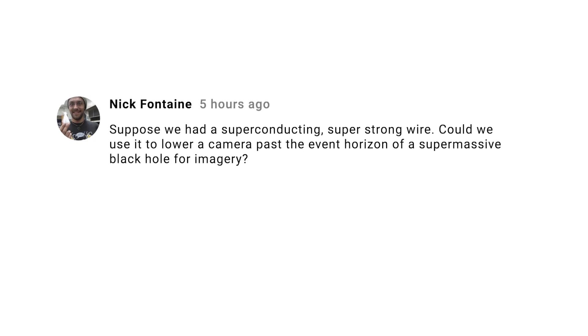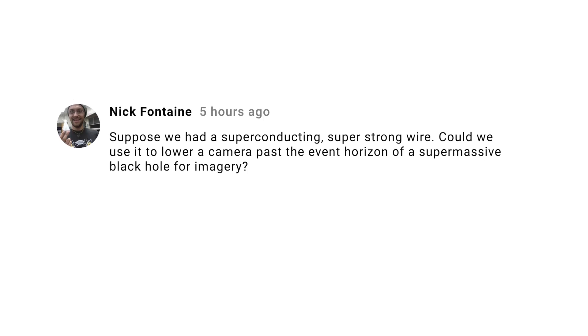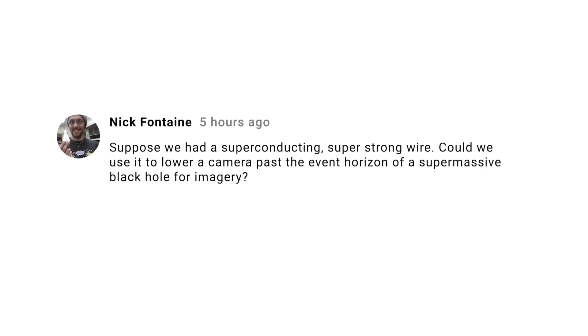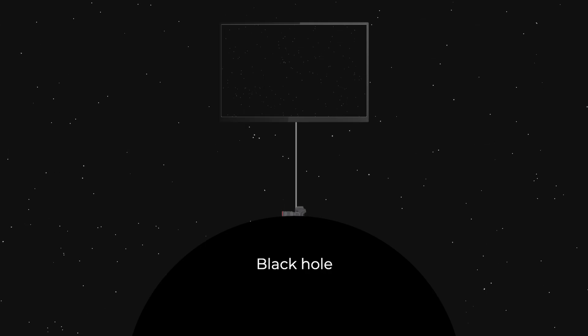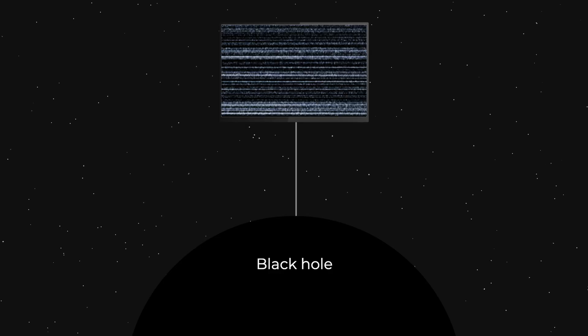Nick Fontaine asks if we had a superconducting and superstrong wire, could we use it to lower a camera below the event horizon of a black hole and see what's going on? Nah, we can't — the reason is simple. The event horizon is the point where gravity grows so strong that light cannot escape. Light is, of course, electromagnetism. In your superconducting wire, the information would come out along the wire using electromagnetism to transmit the signal. Electromagnetism is also what holds the wire together. But we've already said that gravity of the black hole is too strong to let electromagnetism escape — and that's true even on a wire. So the black hole secrets are still safe.